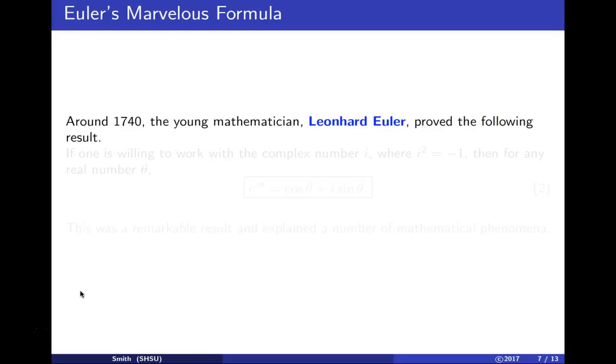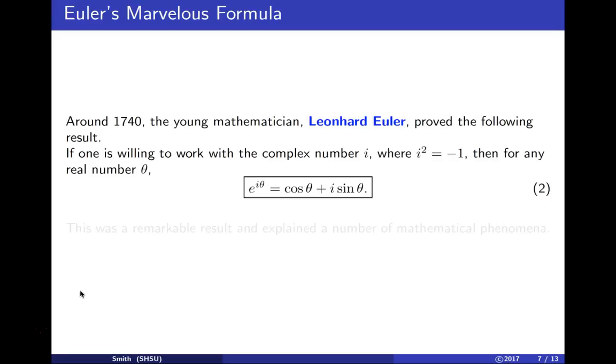Around 1740, the young mathematician Leonhard Euler proved the following result: for any real number θ, the exponential e^(iθ) equals cos(θ) + i·sin(θ).